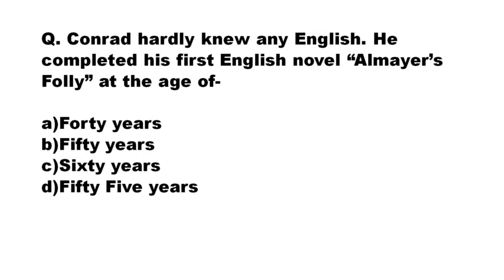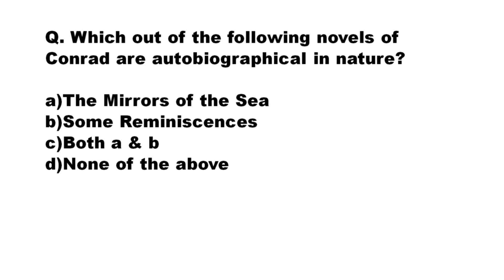Conrad hardly knew any English; he completed his first English novel, Almayer's Folly, at what age? The options are: A) 40 years, B) 50 years, C) 60 years, D) 55 years. The correct answer is option A: 40 years.